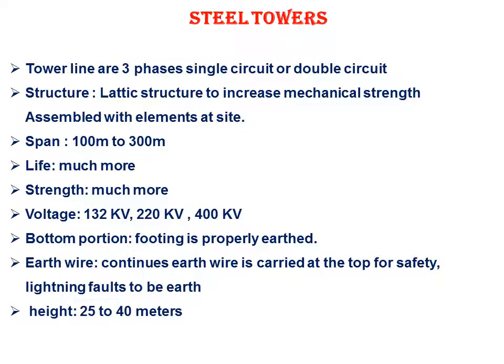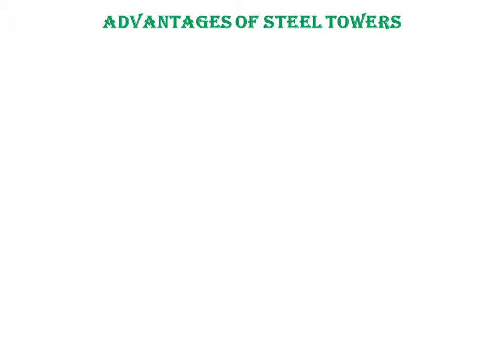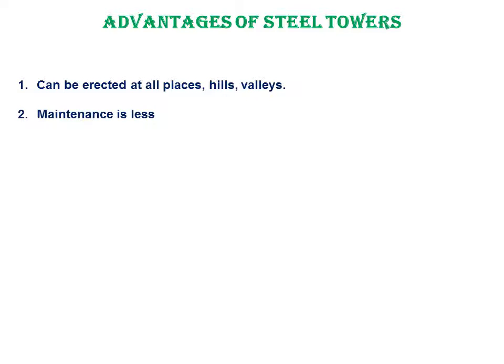The height of steel towers is 25 to 40 meters. They can withstand any climatic conditions. Advantages of steel towers: they can be erected in all places — hills and valleys. Maintenance is very less. Because the spans are greater — about 300 meters — fewer towers are needed overall.